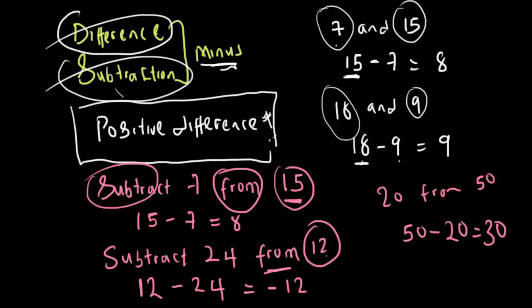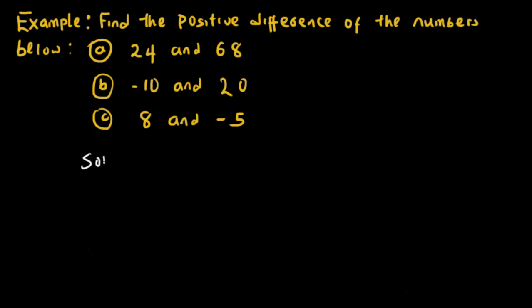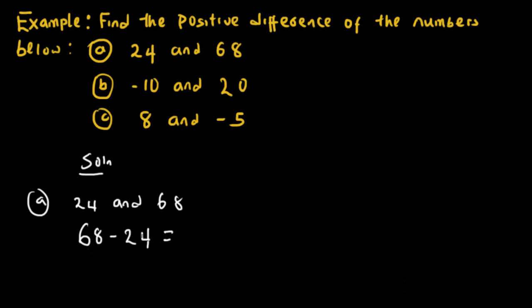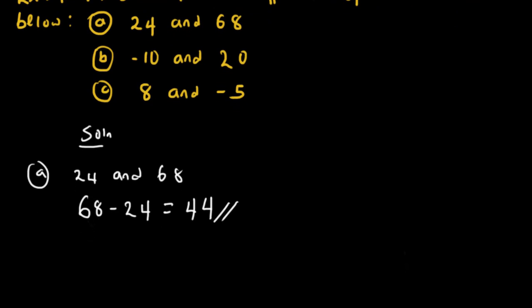Now let's solve some examples. First, we have example (a): find the positive difference between twenty-four and sixty-eight. Remember, the bigger number comes first, so we have sixty-eight minus twenty-four. Eight minus four is four, six minus two is four, giving us forty-four.